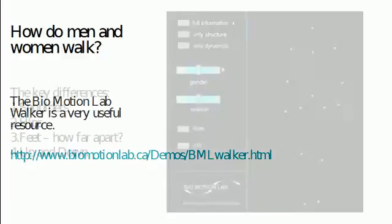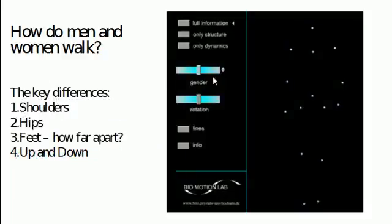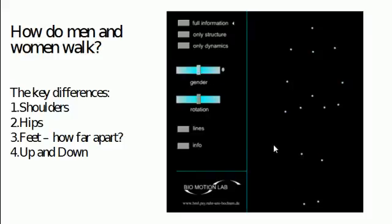It's a really great resource — I highly recommend you take a close look at it. This is actually an older version with just the gender slider, and now you can allow for some other characteristics as well. You can blend in how heavy the walk is, how relaxed the person is, how happy or sad they are. It can actually help you get other characteristics into your walk as well.